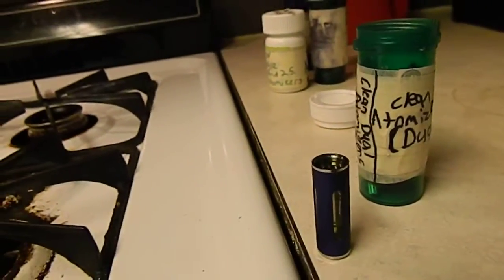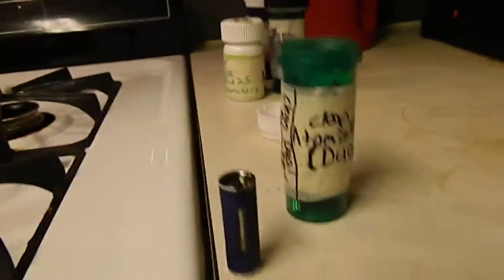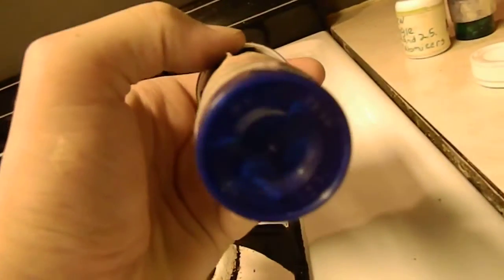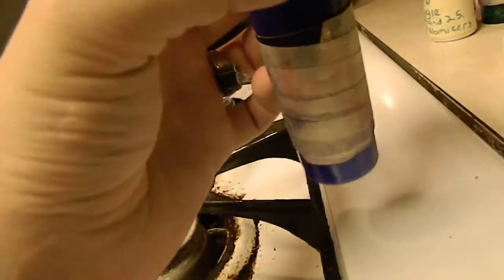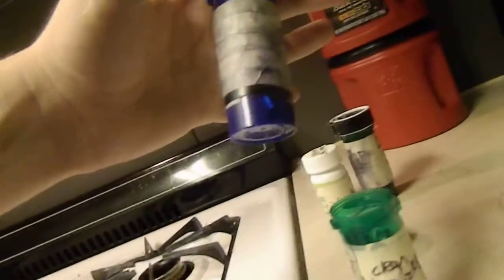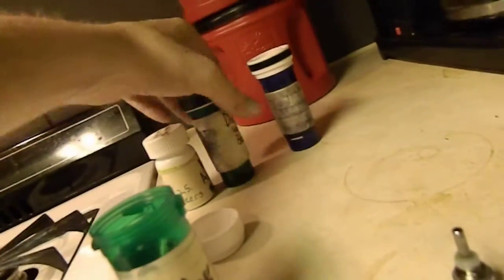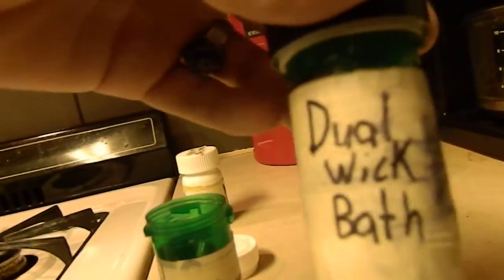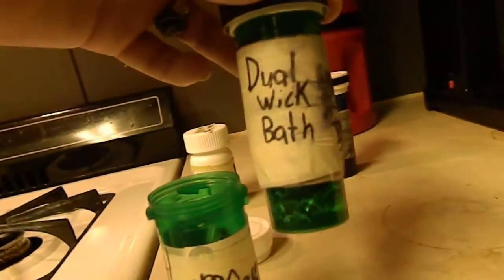So, the quickest way I've figured out how to clean these, and it works perfectly, is just take an old pill bottle or something like this, and as you can hear, I've got atomizers in it. Right now, this is just an atomizer bath. I've got one for single coils, and then I've got one for dual coils.